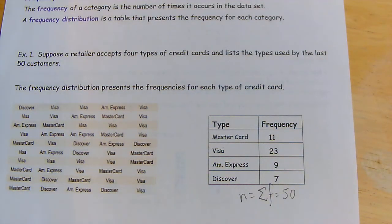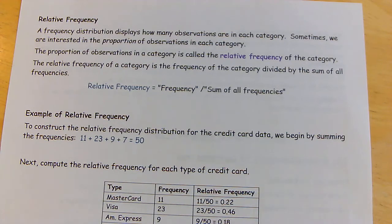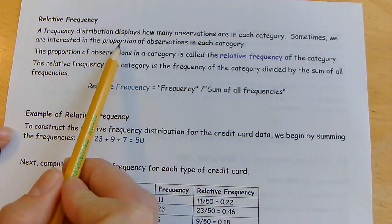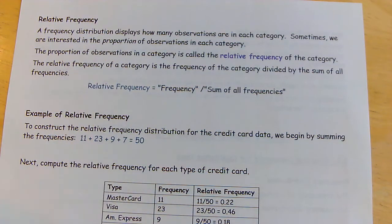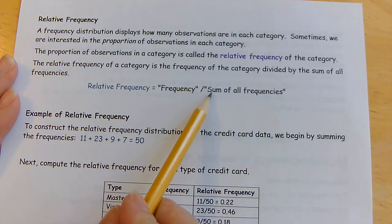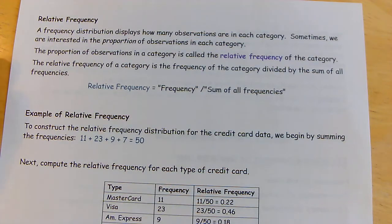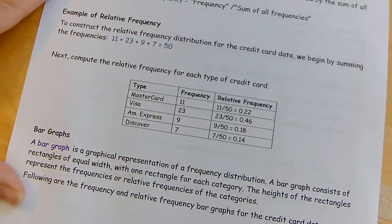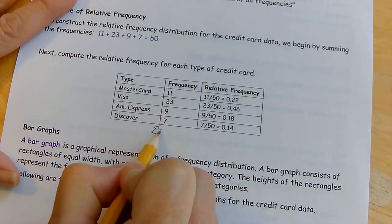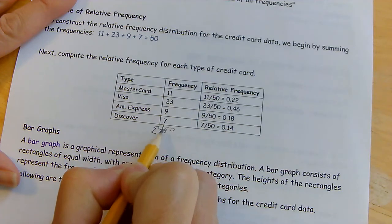Relative frequency: the frequency distribution displays how many are in each category, but sometimes we're interested in the proportion — out of that category over the total. So proportion, percent, fraction — you change it into the percent in each category. It's how many are in that category divided by the total number of individuals on the table. Using the same chart as before, we have a total frequency of 50 customers as our sample size.